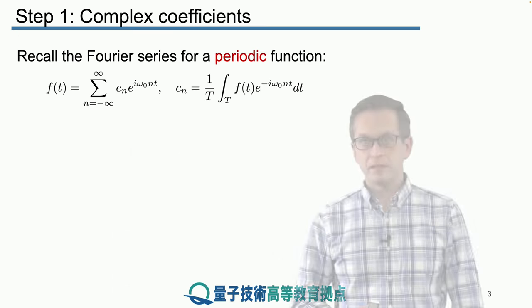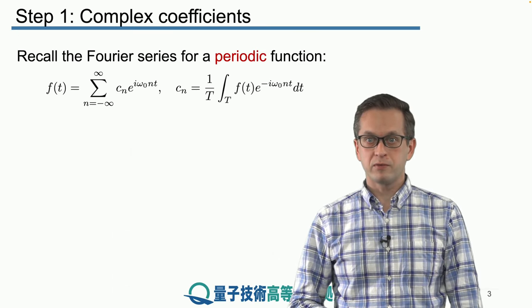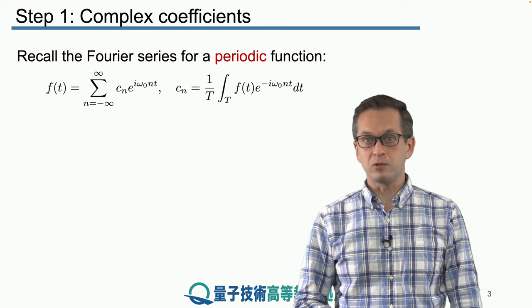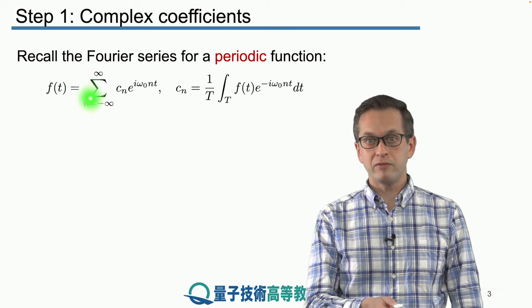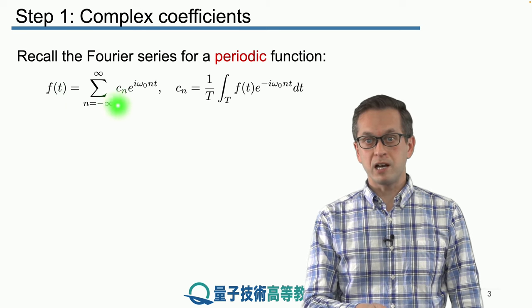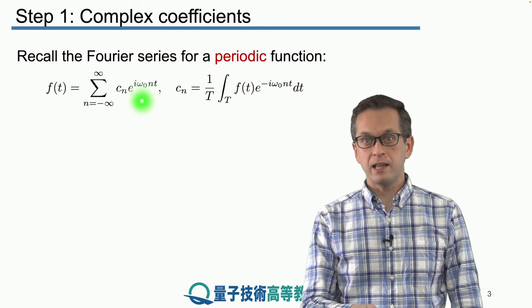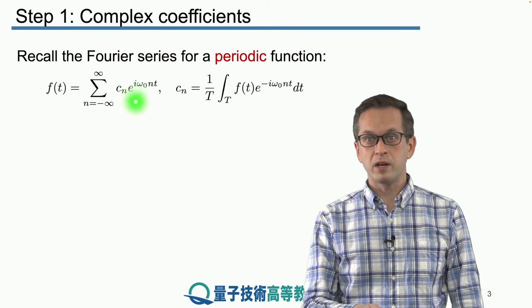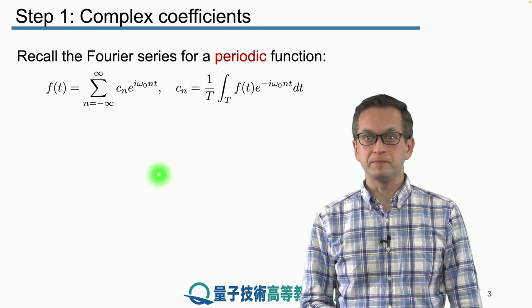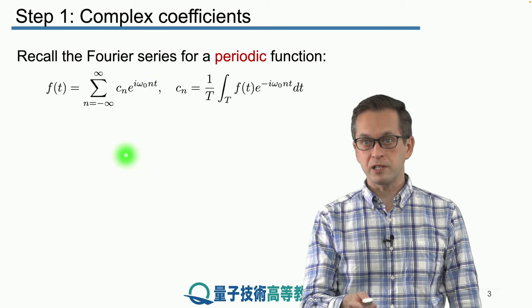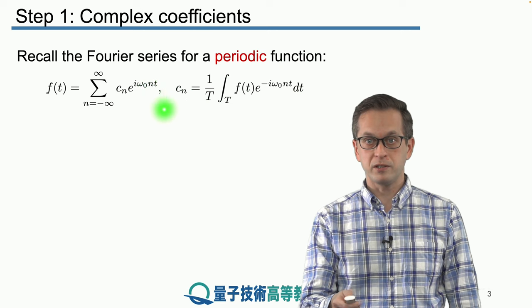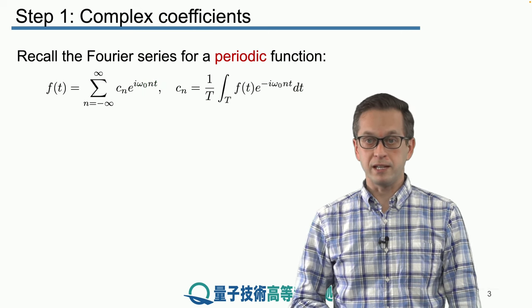Recall that the complex Fourier series for a periodic function is given as follows. We've got our function f expressed as a sum of coefficients cn and these rotating exponential terms, omega 0 times t, where the coefficients themselves are given by the following expression, which we derived in the previous lesson.